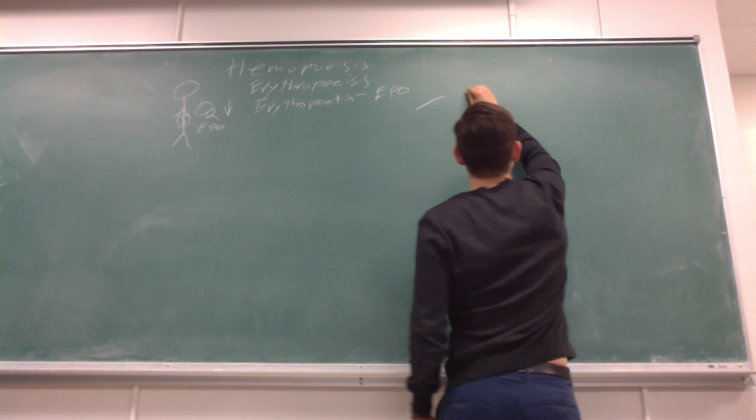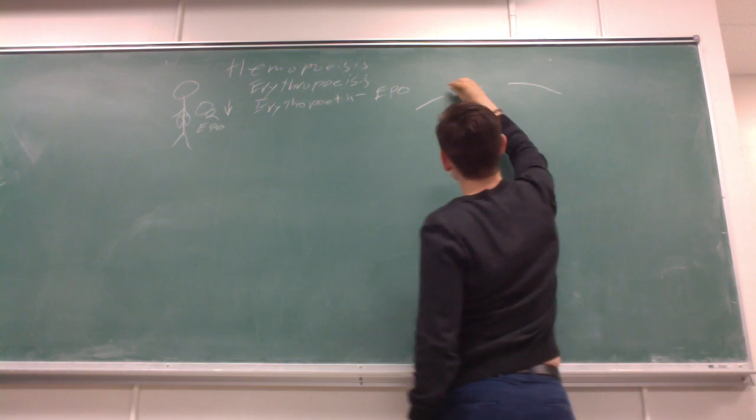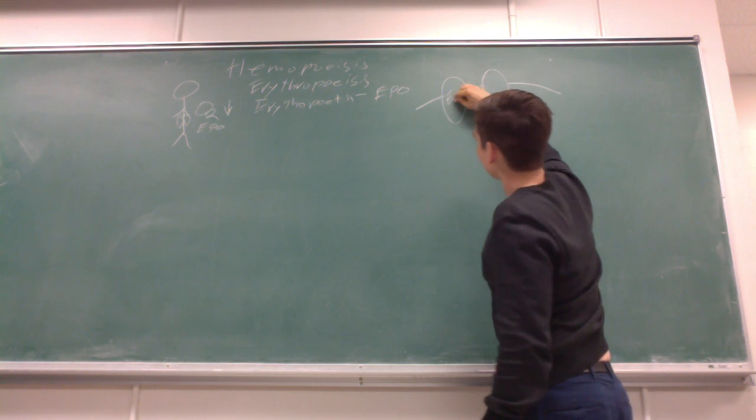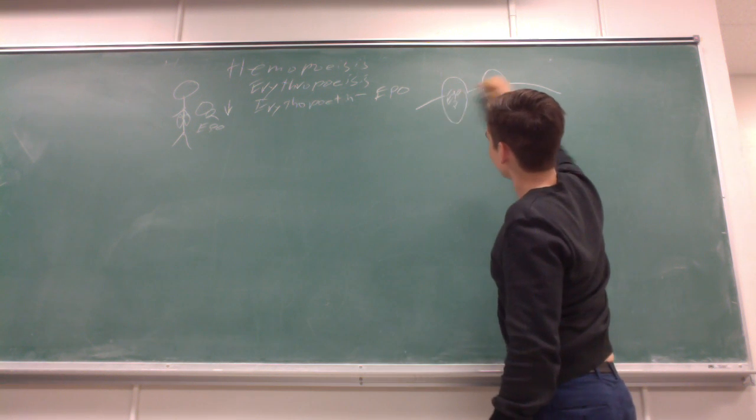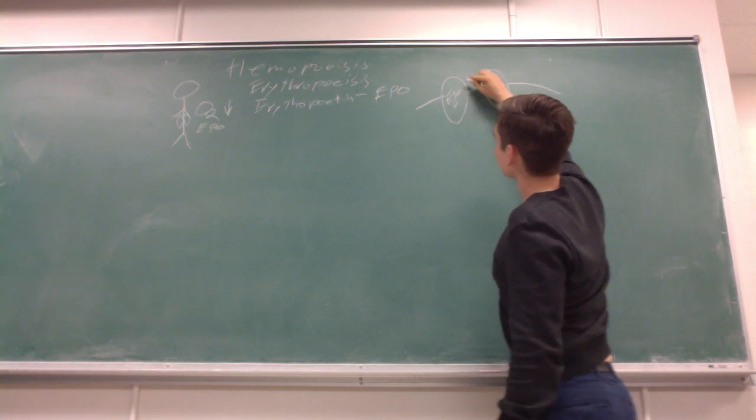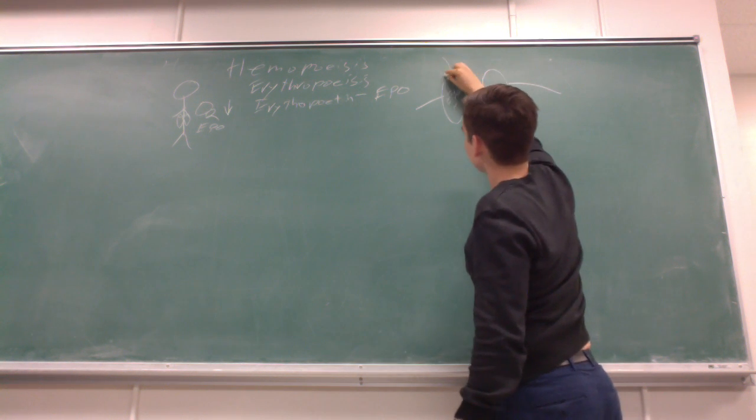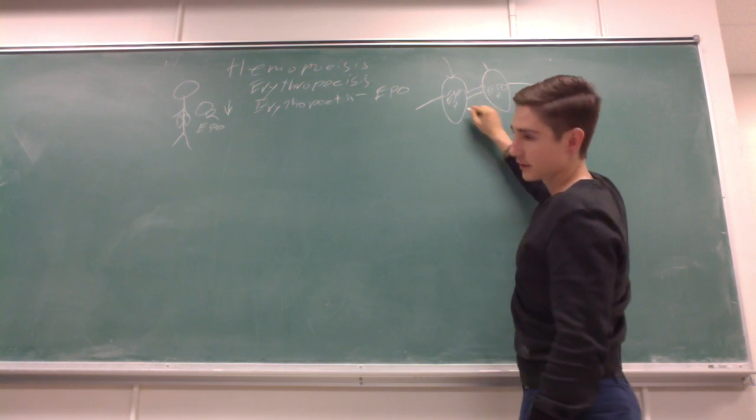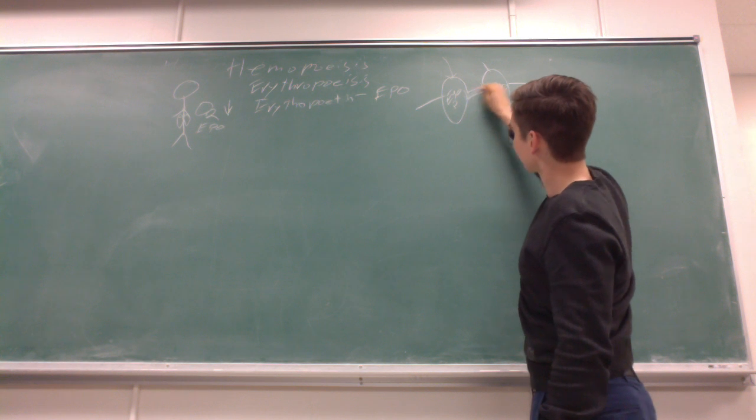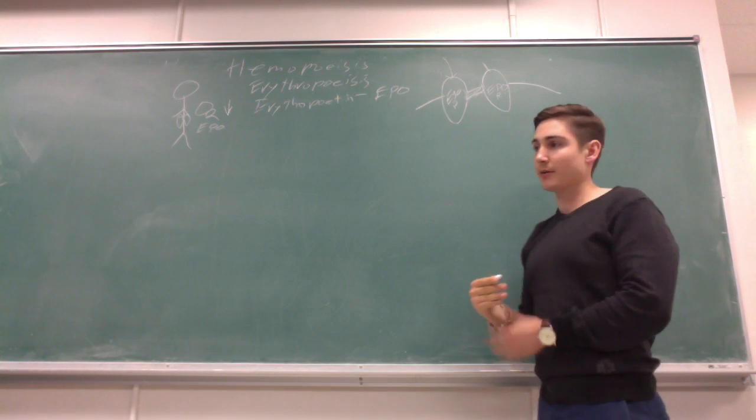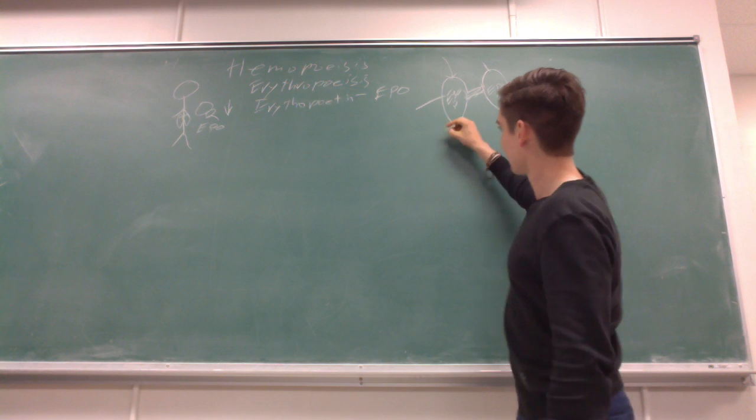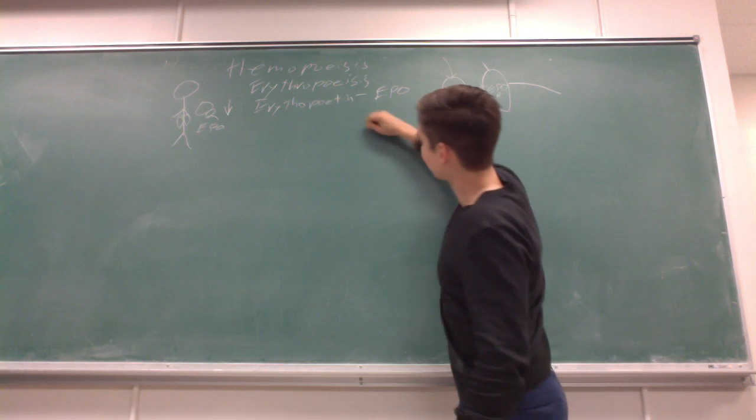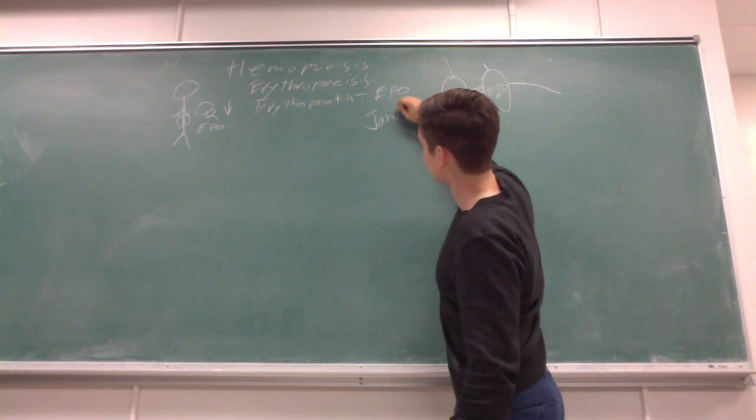So on the cell membrane, there is the EPO receptor. I'm going to draw two of them, because when EPO binds to these receptors, they can dimerize. They come together, which attracts these protein tyrosine kinases, which are JAKs, which stands for Janus kinase.